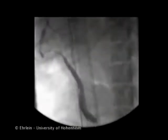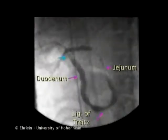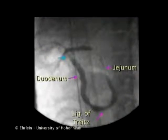The emptied contrast medium is rapidly propelled to the jejunum. We now observe the distal duodenum and proximal jejunum.